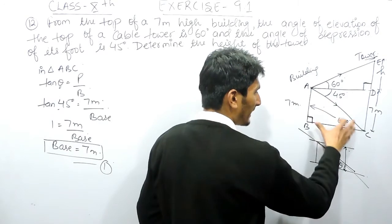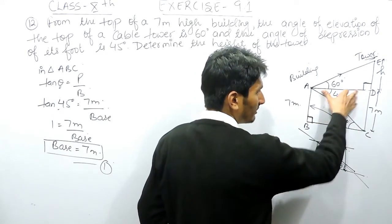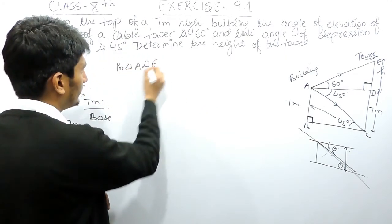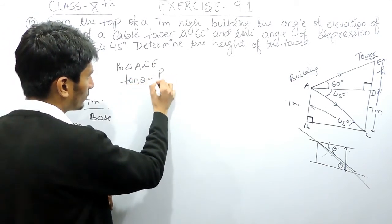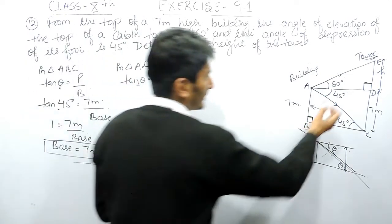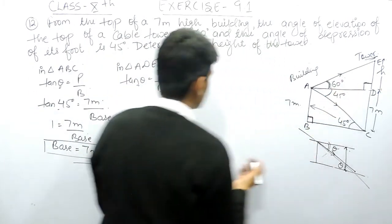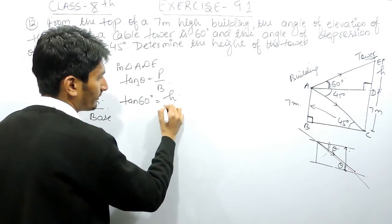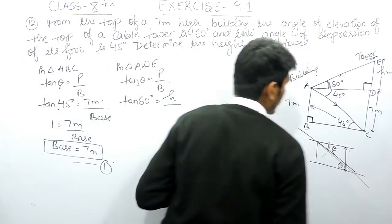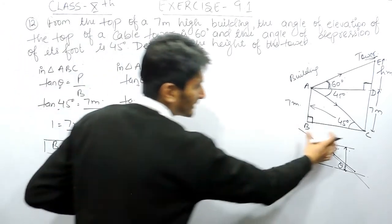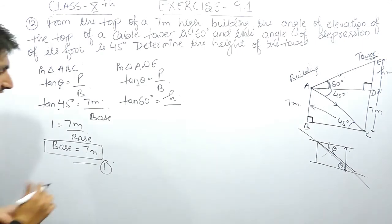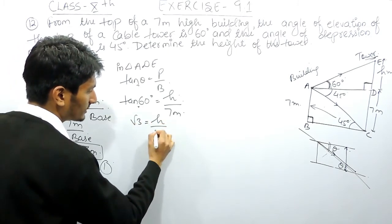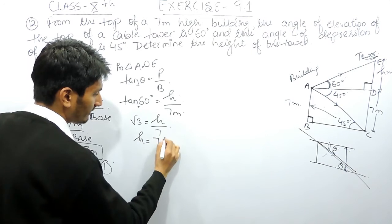Now in the second triangle ADE, tan theta equals perpendicular over base. In this triangle, theta is 60 degrees, so tan 60° equals H over base. The base here is the same as before — 7 meters. The value of tan 60° is √3, so √3 equals H over 7.